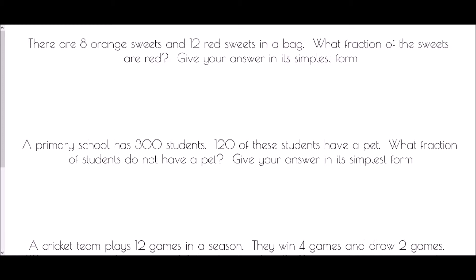To begin this question we need to identify some key values. There are 12 red sweets, so 12 is going to be the numerator. The key is that it asks what fraction of the sweets — so in total there are 8 orange and 12 red sweets, giving us 20 sweets in total. Therefore it is 12 red sweets out of 20.